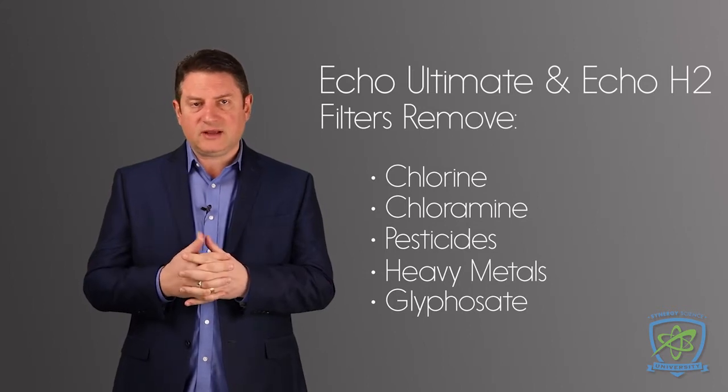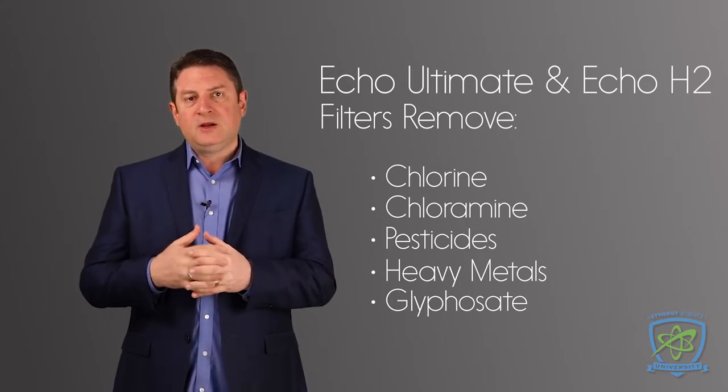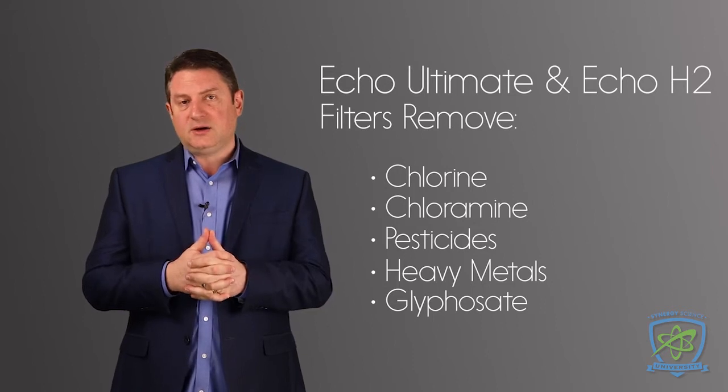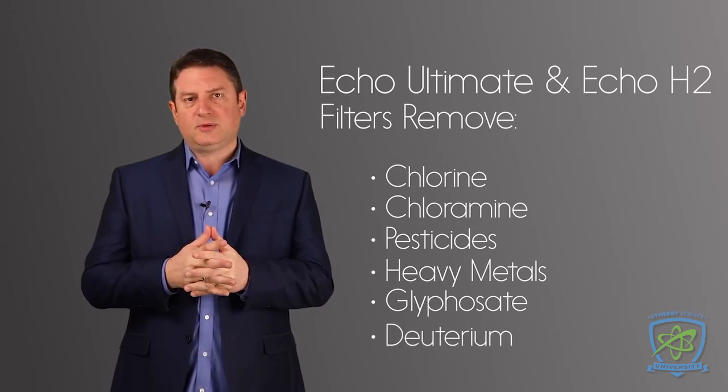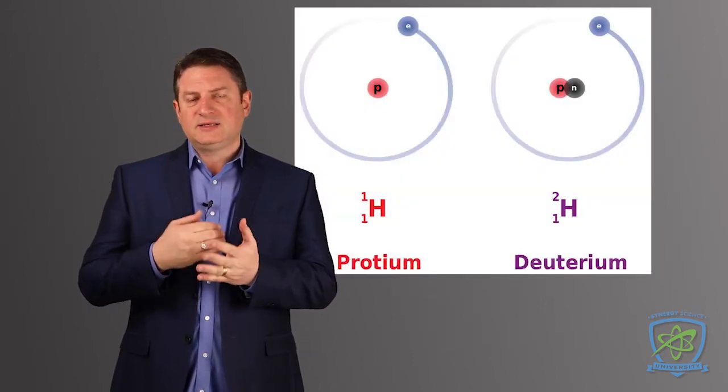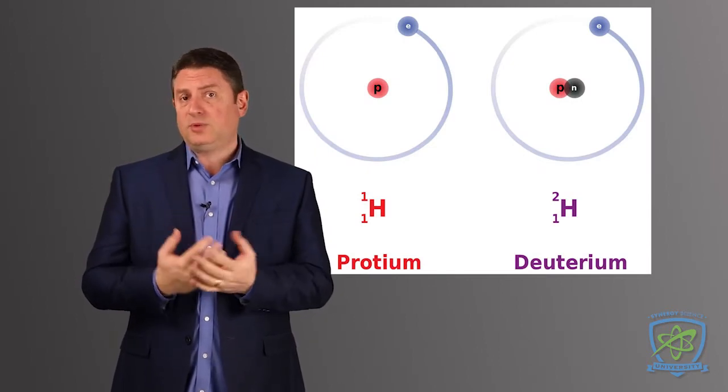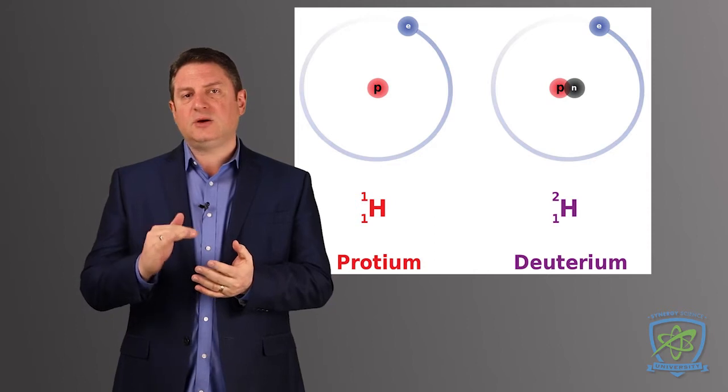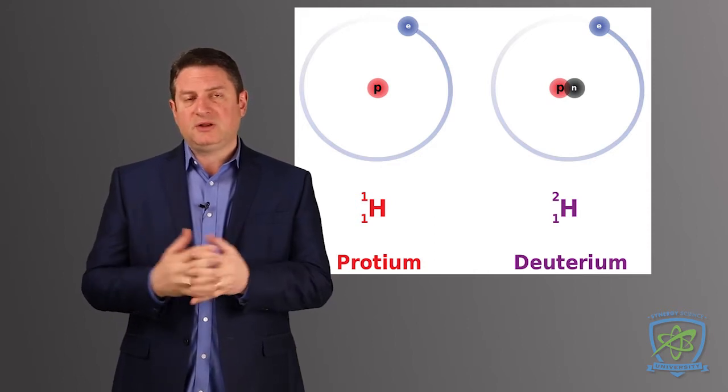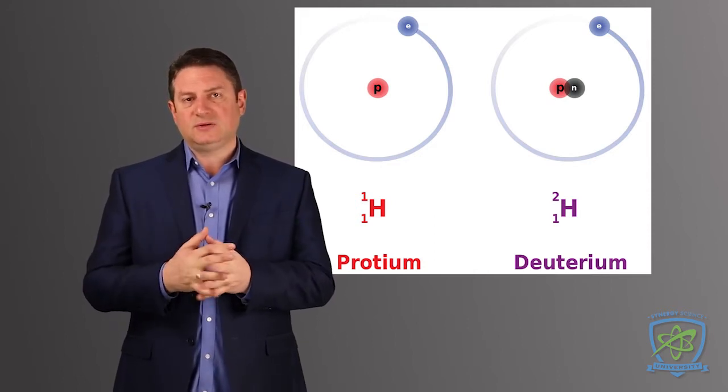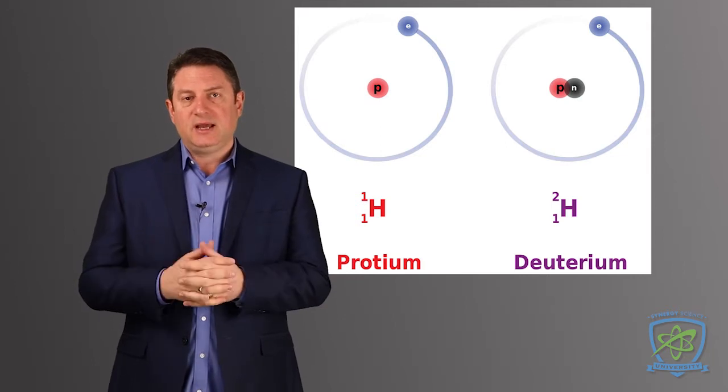We have challenged tests on glyphosate where we take it to a non-detectable level. We also have done a test on deuterium. A lot of people are hearing about deuterium. This is simply another isotope of hydrogen. We don't create deuterium, we don't put deuterium in water, and we actually lower the amount of deuterium a little bit when the water passes through the ECHO H2 machine and the ECHO Ultimate.